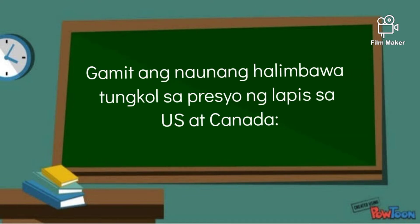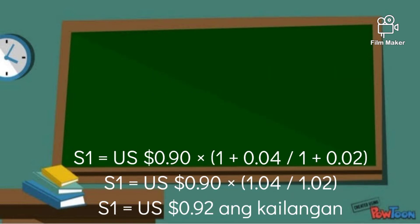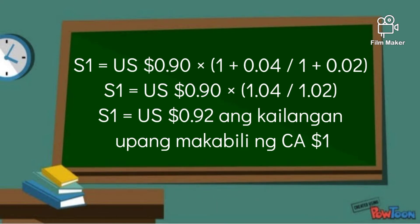Gamit ang naunang halimbawa tungkol sa presyo ng lapis sa US at Canada, S1 is equal to 90 US cents times 1 plus 0.04 over 1 plus 0.02. Ang sagot ay 92 cents US ang kailangan upang makabili ng isang Canadian dollar.